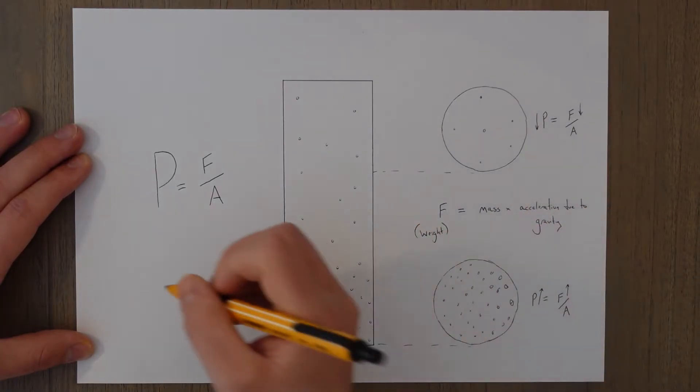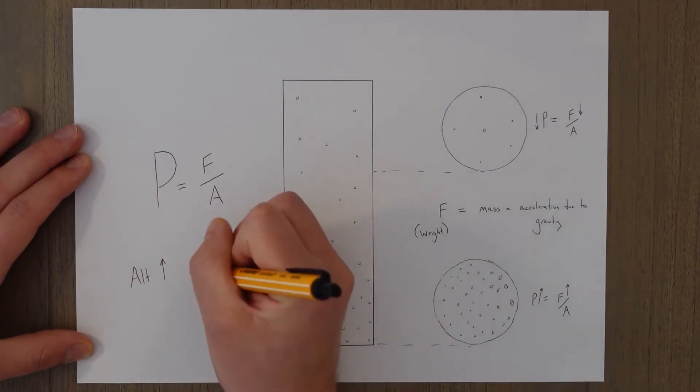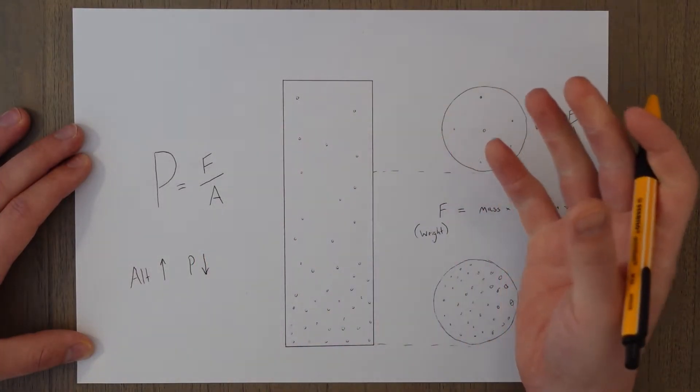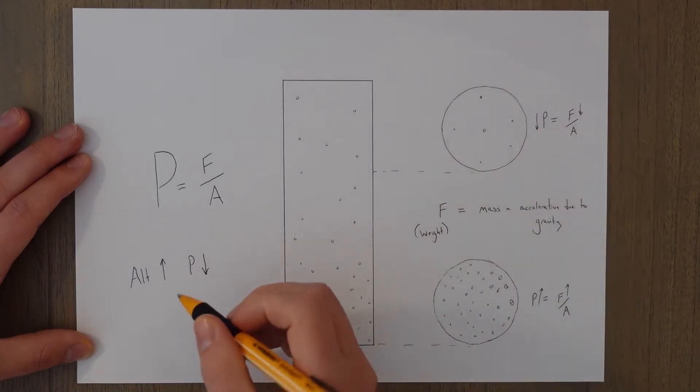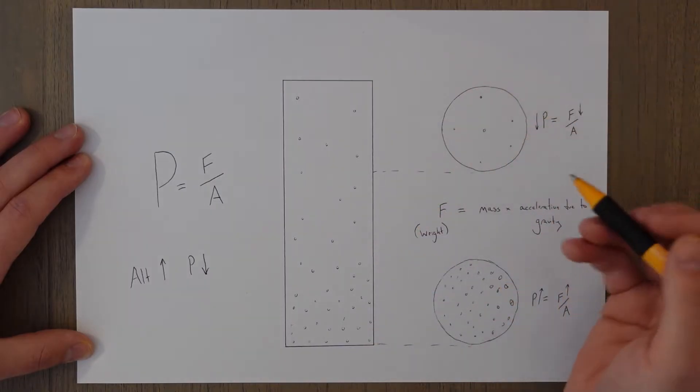So we can say that as altitude increases, the pressure decreases. The standard rate at which this happens is we reduce in pressure by one hectopascal for every 27 or 30 feet for quick calculations.